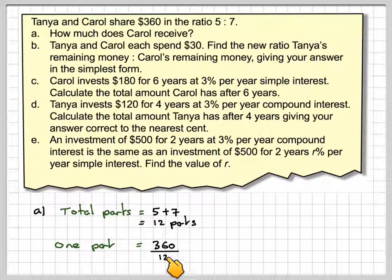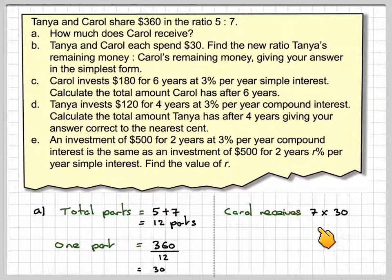And then one part is going to be 360 divided by 12, which is 30, and therefore Carol receives 7 times 30, which is 210.